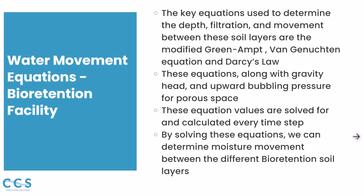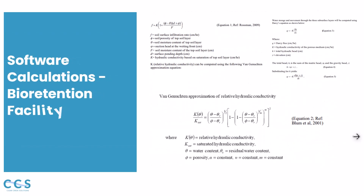Several equations are used to determine water movement from the surface of the bioretention facility through the various soil layers and into an underdrain or native infiltration. The water movement process can be divided into three zones: surface ponding and infiltration into the topsoil layer, percolation through the subsurface layers, and underdrain flow and native infiltration. The key equations are combinations of the modified Green-Ampt equation, the Van Genuchten equation for relative hydraulic conductivity, and Darcy's Law, combined with gravity head and upward bubbling pressure for pore space. These equation values are solved every 15-minute time step. Many people have tried to emulate the bioretention algorithm in a spreadsheet — it can't be done. It's a very complicated algorithm showing the complexity of this facility.